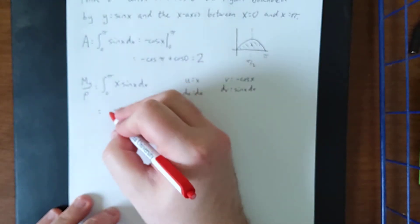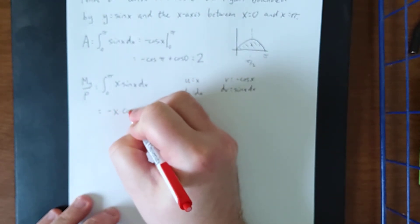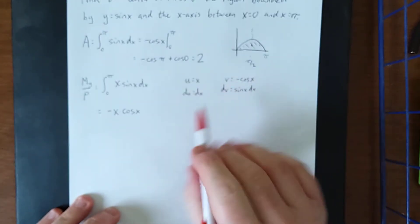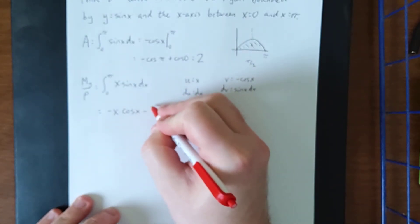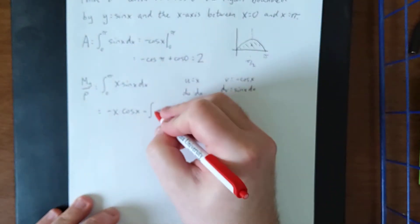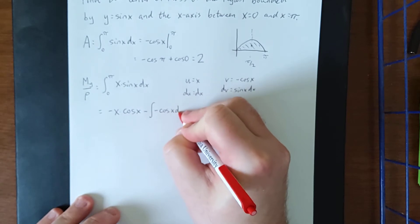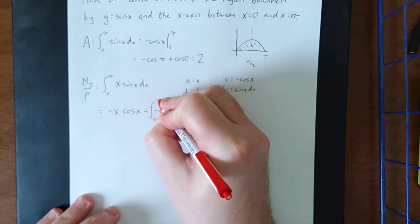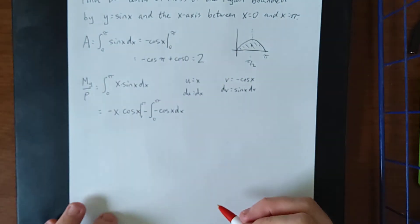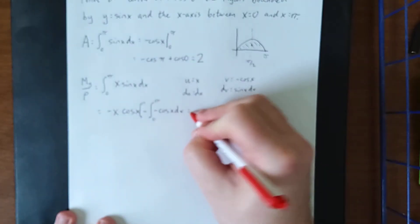We'll save the plugging in bounds for after we're already done. We multiply u times v, we get negative x times the cosine of x minus the integral of v times du. So that'll be negative cosine of x dx. Bounds are still zero to pi and we'll just go ahead and wait until we're done integrating before we evaluate.